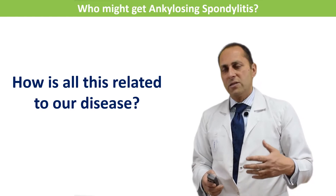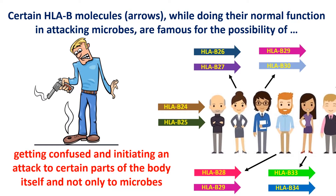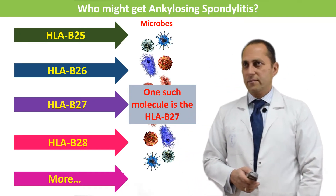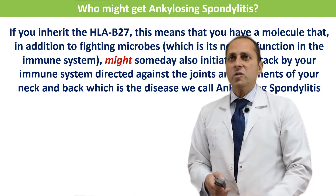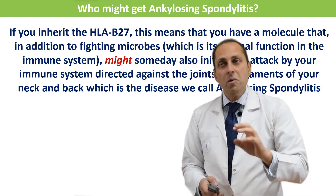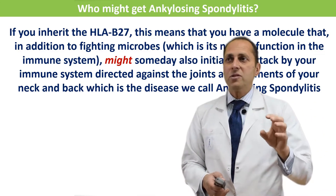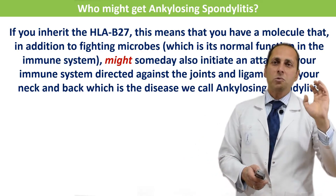How is all this related to ankylosing spondylitis? Certain HLA-B molecules, while doing their normal function in attacking microbes, are famous for the possibility of getting confused and initiating an attack against certain parts of the body itself — and not only against microbes. One such molecule is HLA-B27. If you inherit HLA-B27, this means you have a molecule that, in addition to fighting microbes, might someday also initiate an immune attack directed against the joints and ligaments of your neck and back — which is the disease we call ankylosing spondylitis.